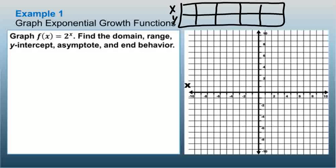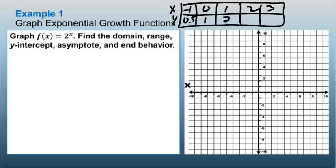We'll use x values of negative 1, 0, 1, 2, and 3. For f(x) = 2^x: 2 to the negative 1 is 0.5, 2 to the 0 power is 1, 2 to the 1st power is 2, 2 squared is 4, and 2 cubed is 8.